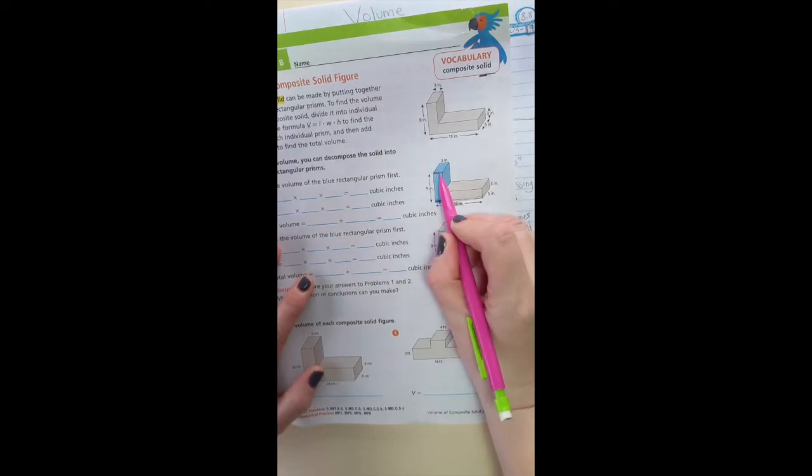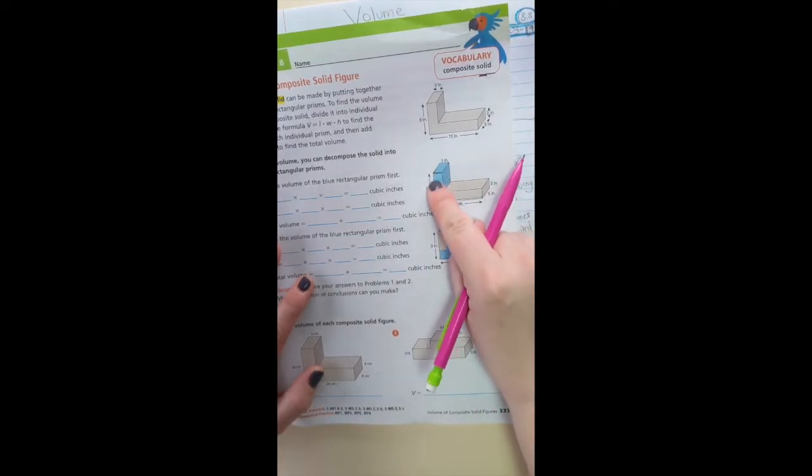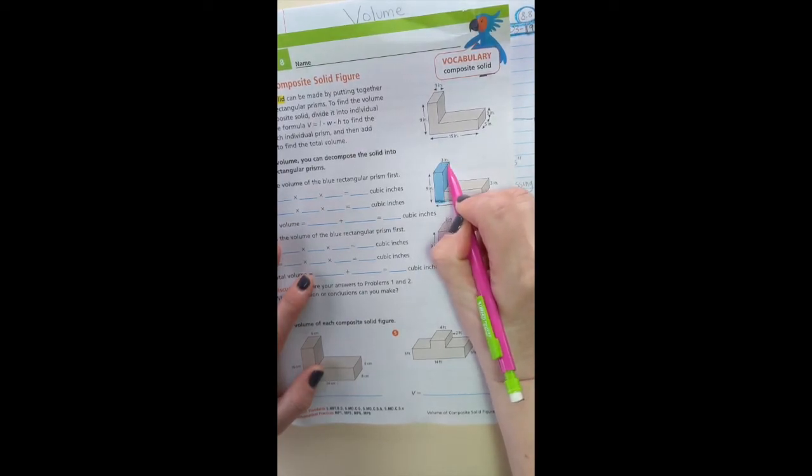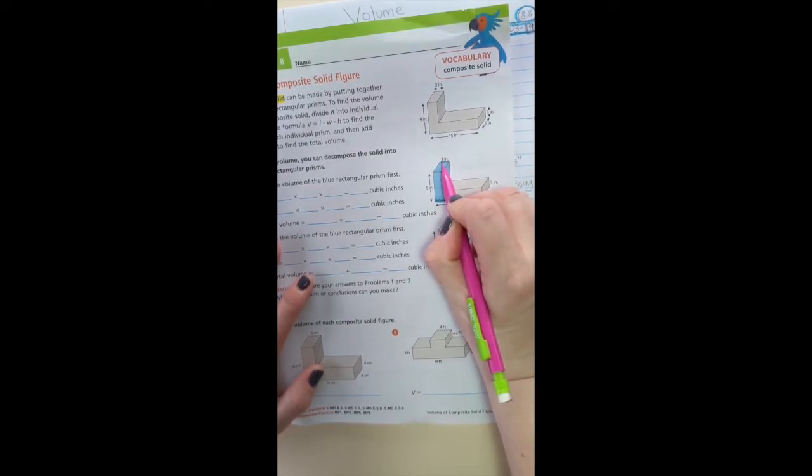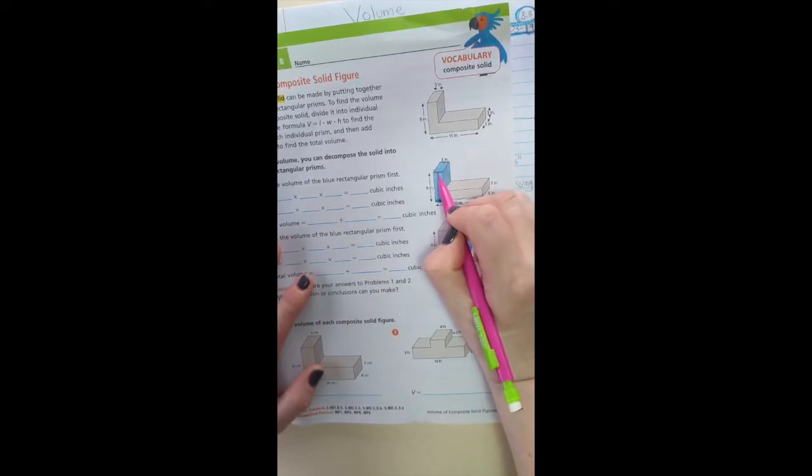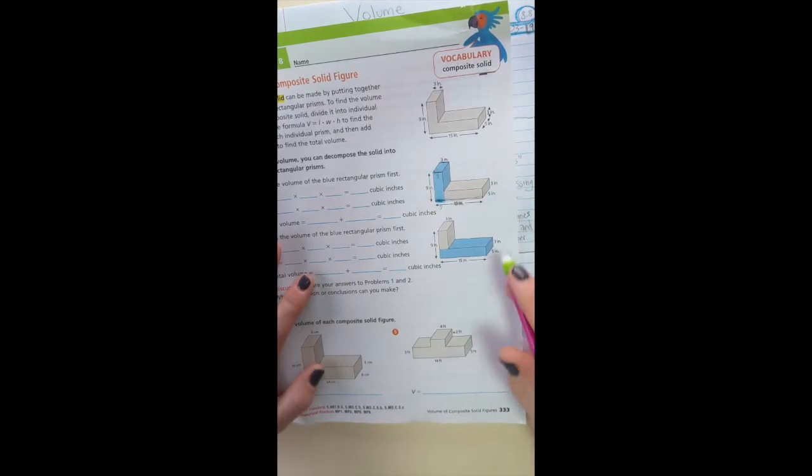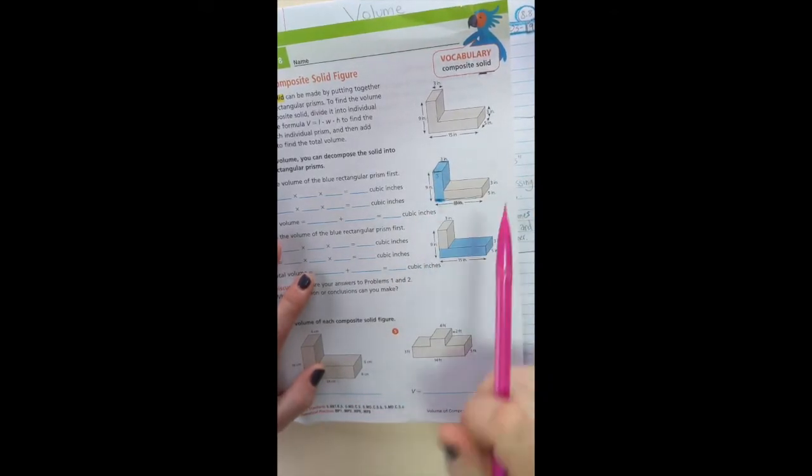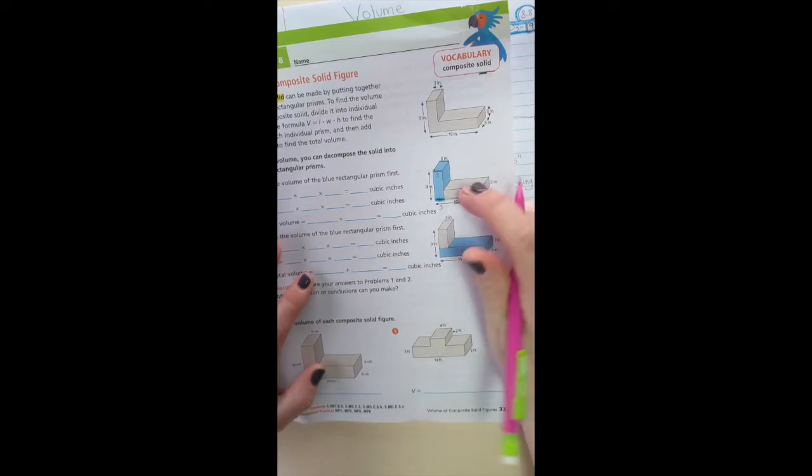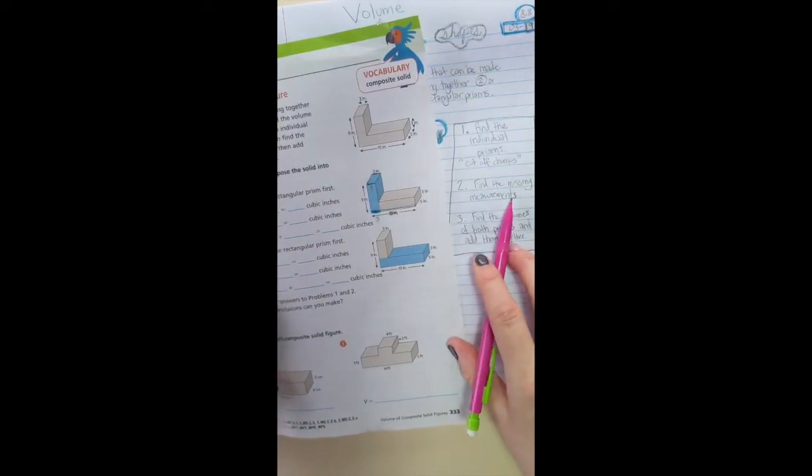But I also know that this is the front of this rectangular prism and that is the back of the rectangular prism. So I know that because front and back are opposite, this is 3, this is 3, which then tells me that this is 3. Don't let that be super confusing. Just kind of look for numbers that help you find the missing measurements.